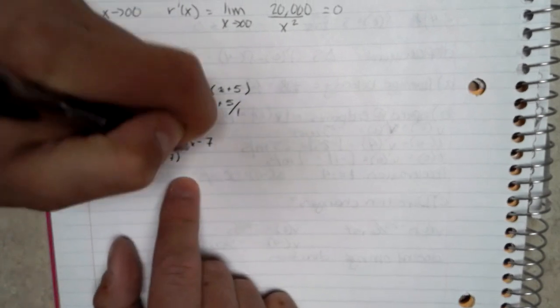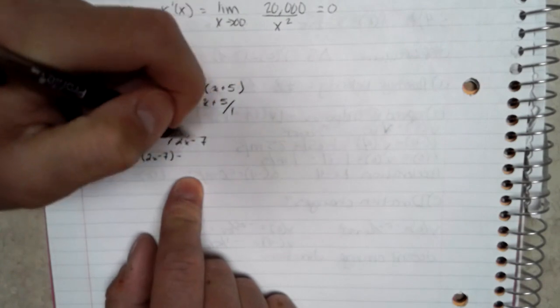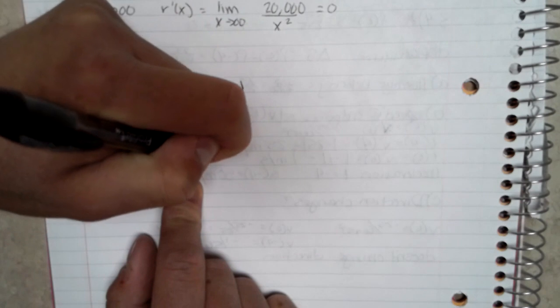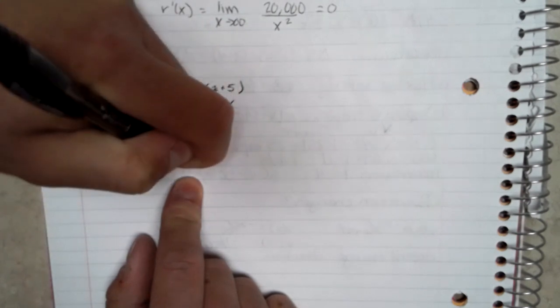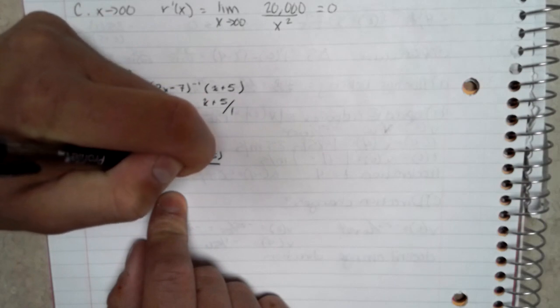minus the derivative of (2x minus 7), which becomes 2, times (x plus 5), all divided by g(x) squared, which is (2x minus 7) squared.